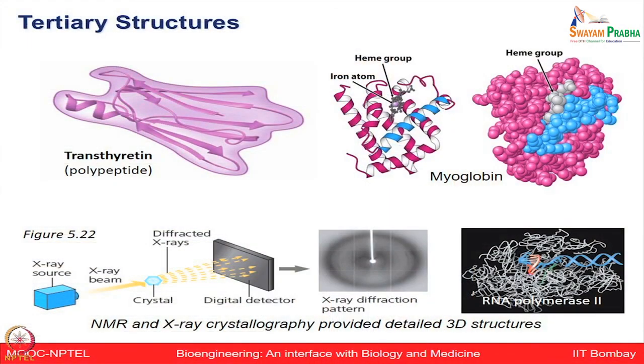Let us move on to tertiary structures. Tertiary structure refers to interactions — especially hydrophobic, electrostatic, and hydrogen bond interactions — between amino acid side chains located far apart in the polypeptide sequence, causing the protein to fold into a three-dimensional arrangement of atoms. Folding takes place such that hydrophobic residues get buried to form the core, while hydrophilic amino acids remain on the surface in contact with the polar surroundings. Examples include myoglobin and transthyretin proteins, and these structures can be studied using NMR and X-ray crystallography.